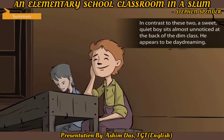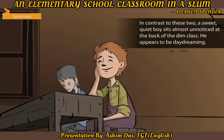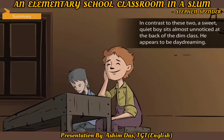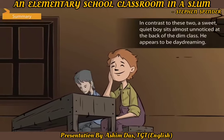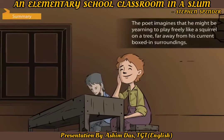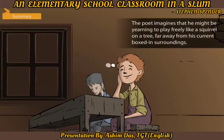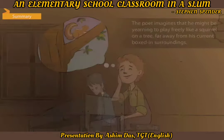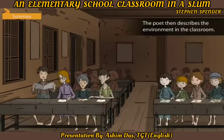In contrast to these two, a sweet, quiet boy sits almost unnoticed at the back of the dim class. He appears to be daydreaming. The poet imagines that he might be yearning to play freely like a squirrel on a tree, far away from his current boxed-in surroundings.